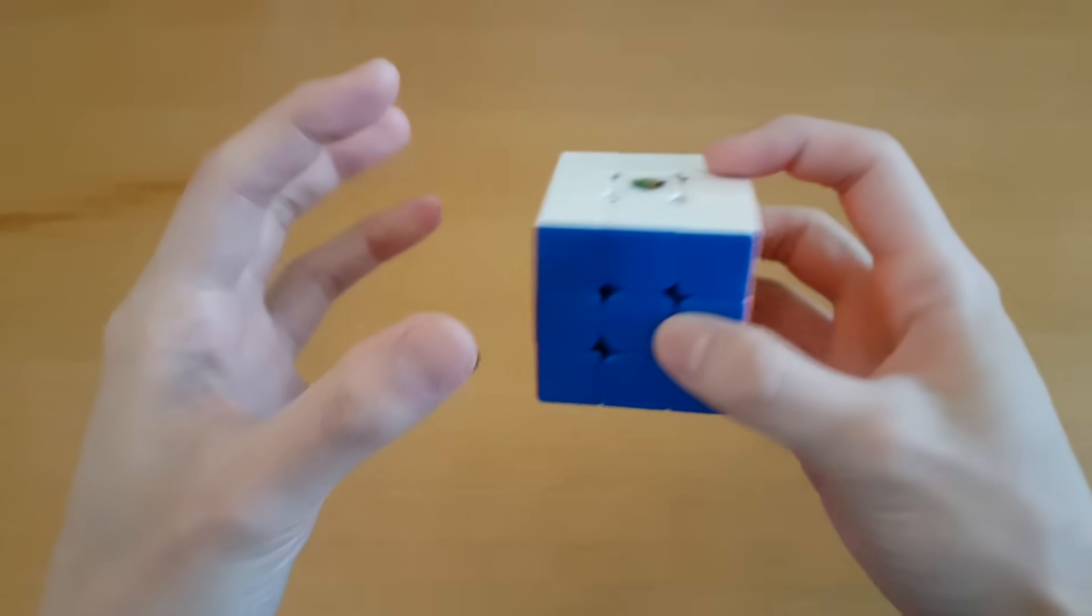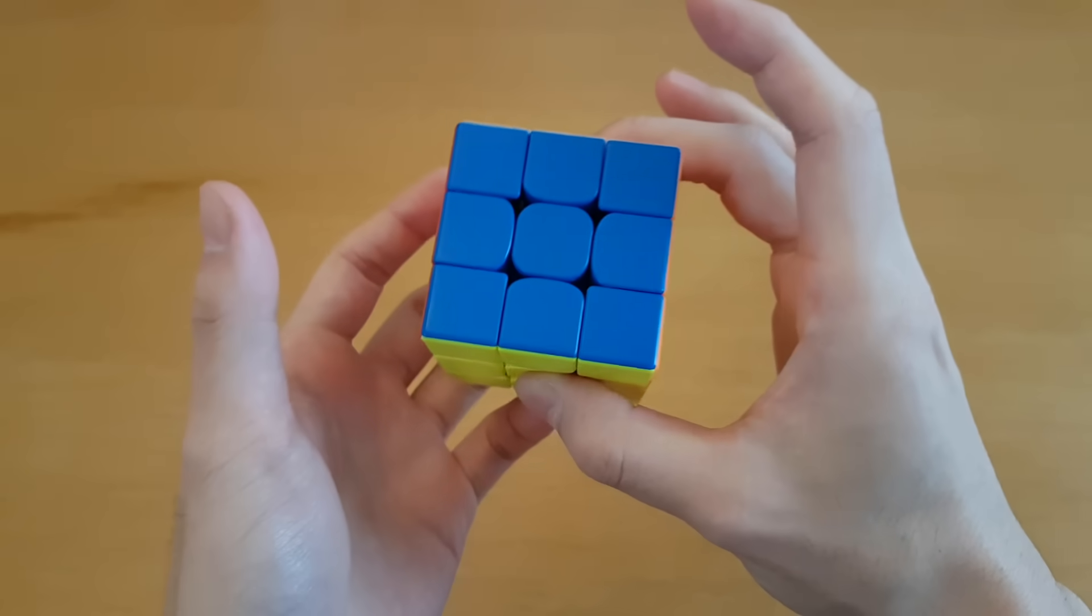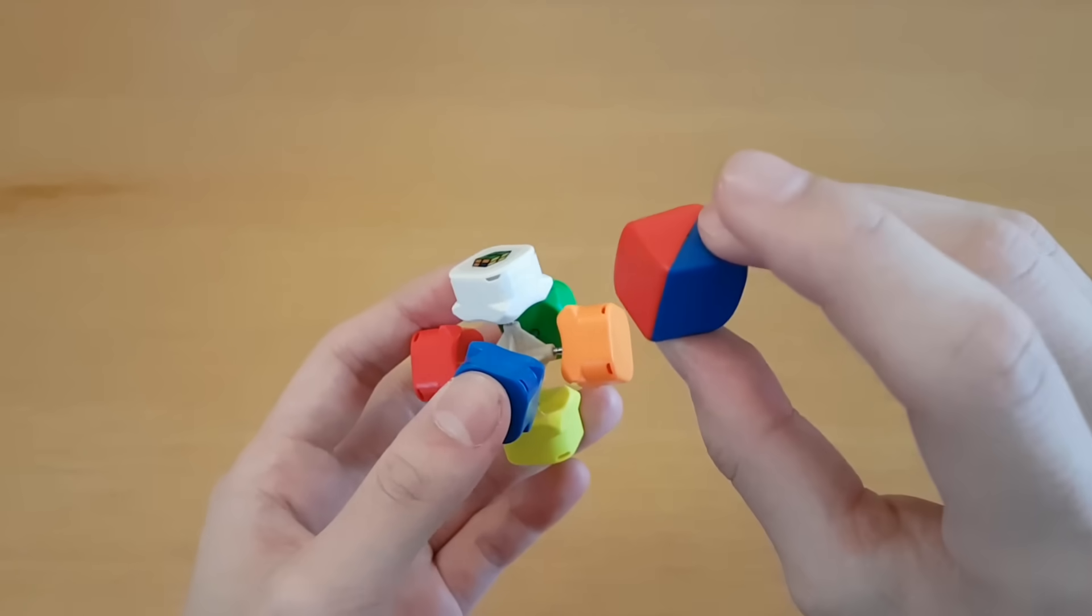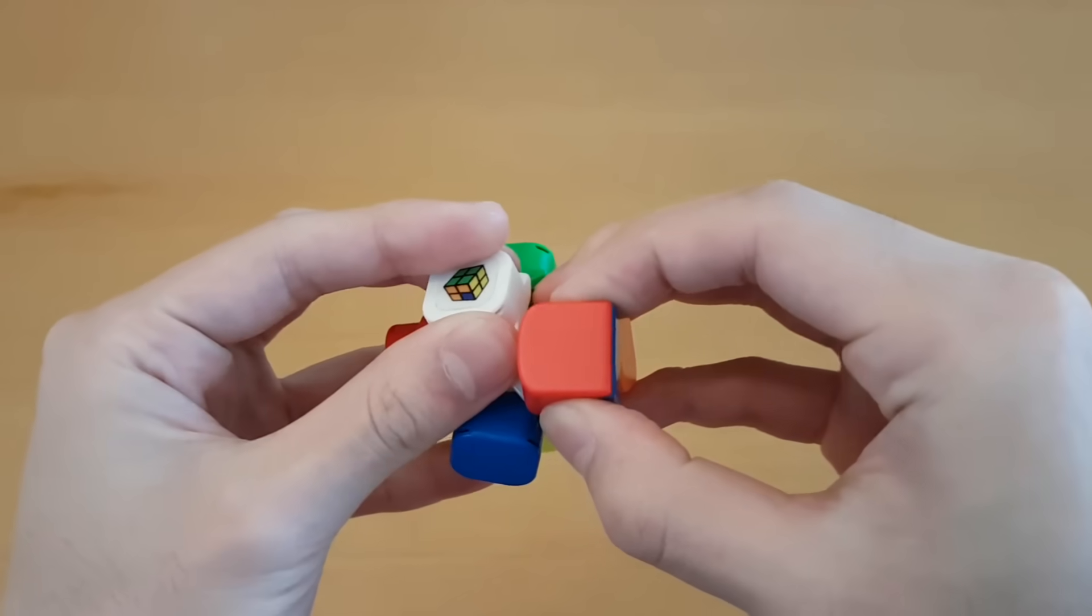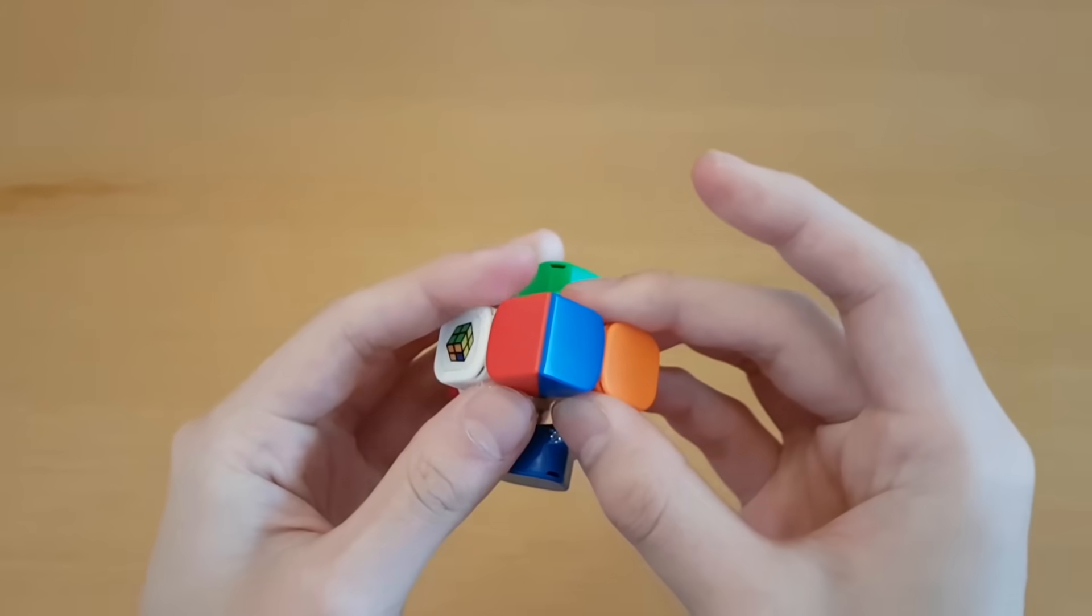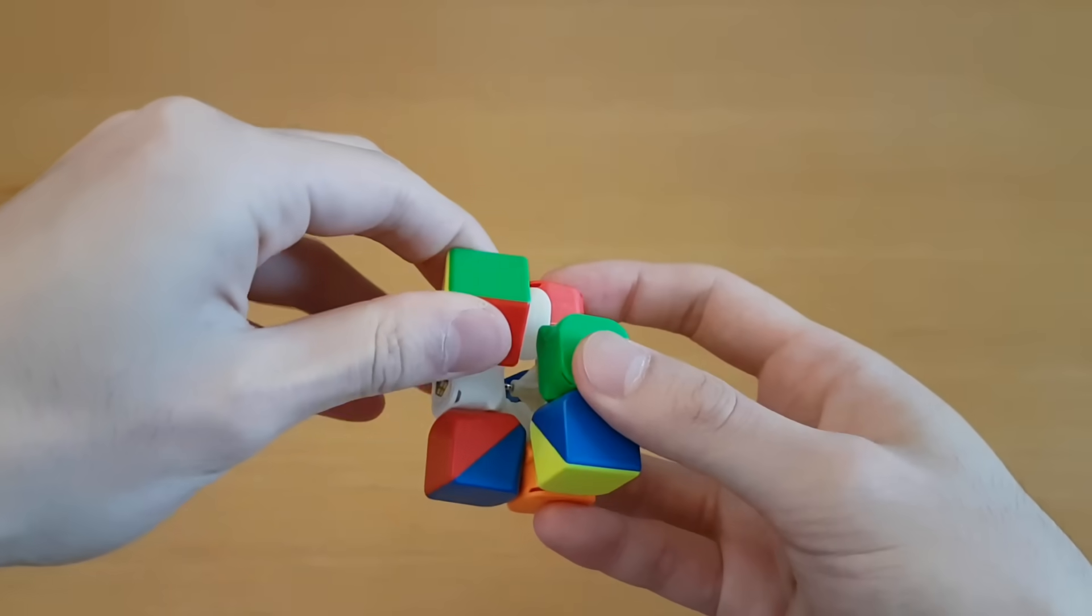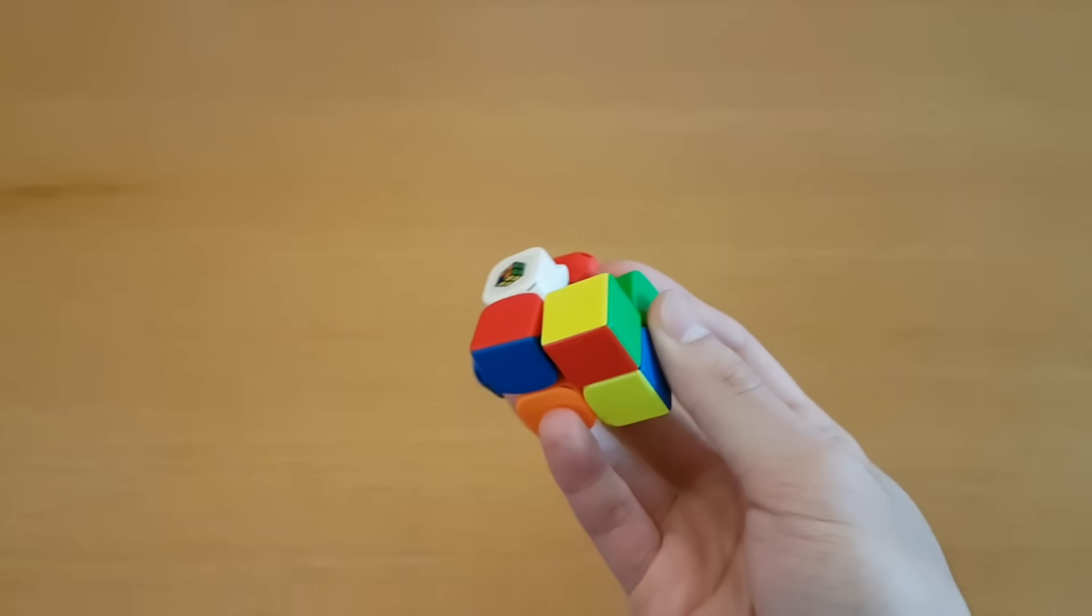For a 3x3 cube, the way it's all held together is that there is a core. The core is made up of all the centerpieces. The edge pieces, which have two colors, are held together by going between two centerpieces. And once you have multiple edge pieces in there, then you can insert a corner piece in between the edge pieces, like that.